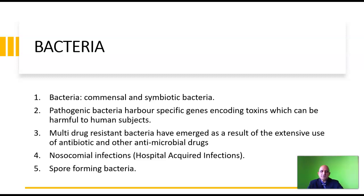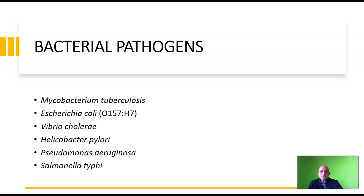Nosocomial infections, or hospital-acquired infections, are another cause for concern to biorisk managers. Spore-forming bacteria such as Bacillus anthracis pose a risk in terms of their potential to be used as weapons in bioterrorism. Bacterial pathogens of concern are Mycobacterium tuberculosis — the causative agent for tuberculosis — E. coli O157:H7, which is an enteric pathogen, Vibrio cholerae, which causes cholera, Helicobacter pylori, Pseudomonas aeruginosa, and Salmonella typhi. Many of these bacteria have developed resistance to multiple drugs, which poses a challenge to clinicians as well as to biorisk managers.